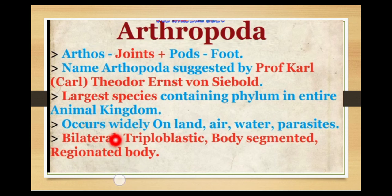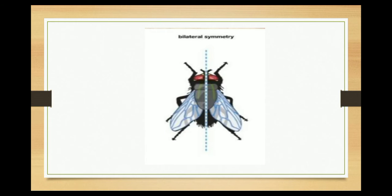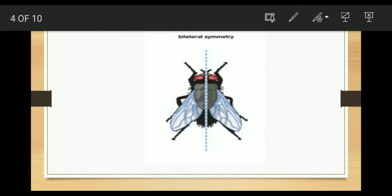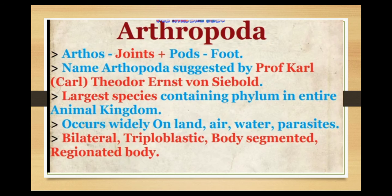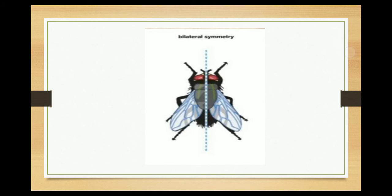The symmetry of arthropods is bilateral symmetry. Bilateral symmetry means that when we cut these animals from the center, the body is divided into two equal halves, that is why we call it bilateral symmetry.